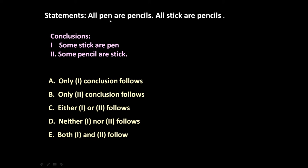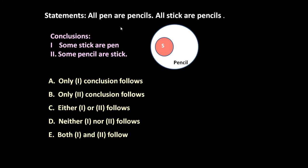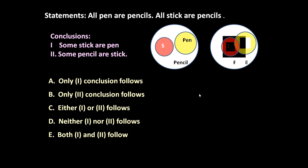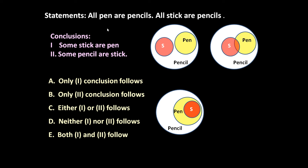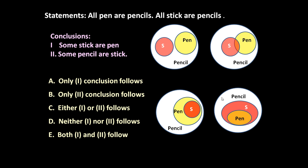Let us represent these two statements with Venn diagrams. In the first figure, all pens are pencils and all sticks are pencils — both circles separate inside pencils. In the second figure, some sticks are also pens — the circles overlap. In the third, all sticks are pens as well as pencils. In the fourth, all pens are pencils and all sticks are pencils with no overlap. Any one of the four figures may be true.